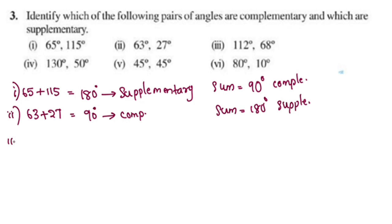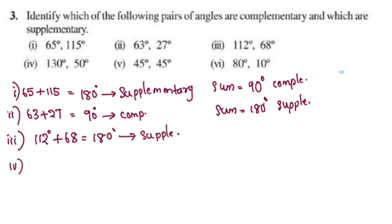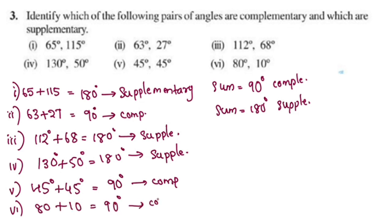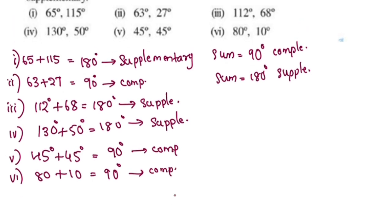Second one: 62 plus 68. First one: 120 degrees plus 68. Second one: 63 plus 80 degrees, which gives 130 degrees. 90 degrees is supplementary. 45 degrees plus 45 degrees is complementary. 60 is a complementary angle. 80 plus 10 gives 90 degrees, which is a complementary angle — 3 questions.